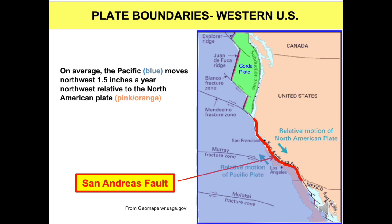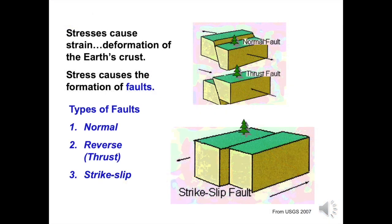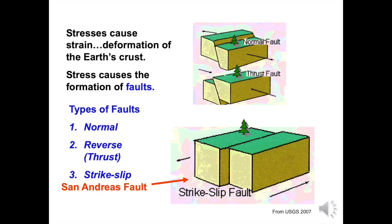The last major earthquake to occur on the San Andreas Fault in the Fraser Park area happened in 1857, but many other nearby faults are capable of major rupture. When most faults rupture, crust on one side of the fault moves up or down relative to the other side — that is shown with the normal fault and reverse fault block diagrams on top. However, the San Andreas Fault is a strike-slip fault. Along a strike-slip fault, broken crust moves laterally as seen in the lowest graphic.